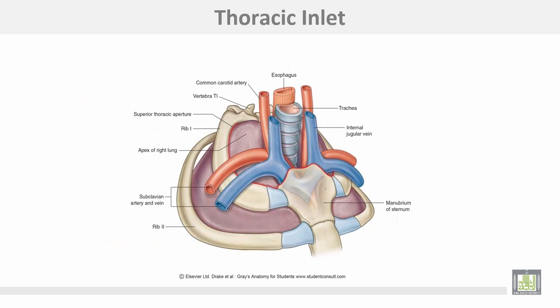The thoracic inlet contains multiple structures — tubular structures such as the esophagus, trachea, and thoracic duct, and vascular structures such as the internal jugular veins, common carotid, and brachiocephalic vessels. The apex of the lung also passes through the thoracic inlet to the root of the neck.